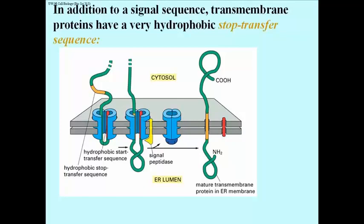Some proteins produced by ribosomes on the RER don't actually go all the way into the lumen, but become membrane proteins.